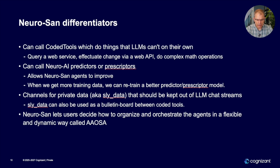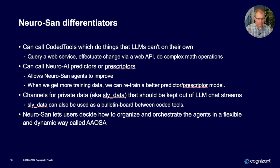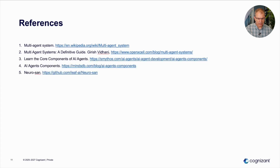There is a channel called slide data for private data that is kept out of the reach of the LLMs, which is very handy. Neurosan also lets users decide how to organize and orchestrate agents in a flexible and dynamic way called AAOSA, which is their own technology. These are a bunch of references that you can refer to. Thank you.